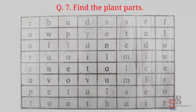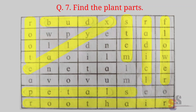Question 7: Find the plant parts. Root, stem, radicle, flowers, bud, petals, root hair, calyx, vein.